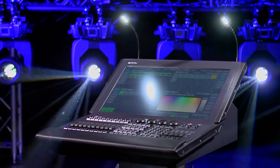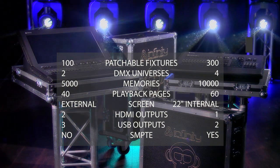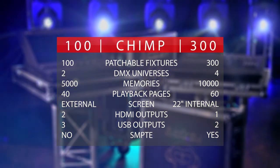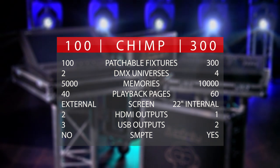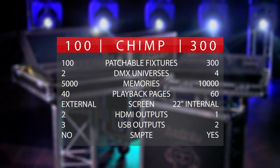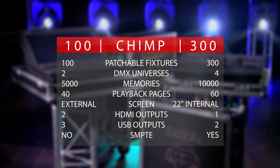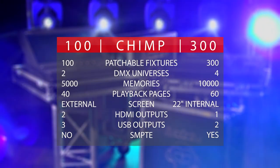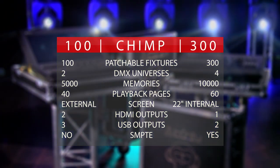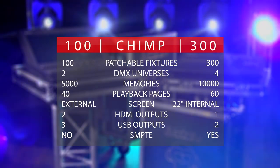The main differences between the CHIMP 100 and CHIMP 300 are: patchable fixtures, DMX universes, memories, playback pages, screen, HDMI outputs, USB connections, and SMPTE.